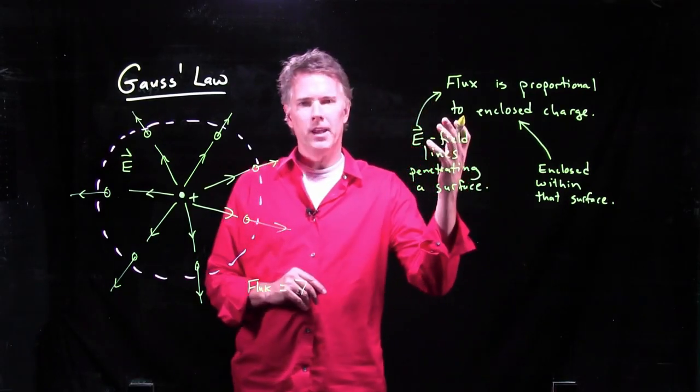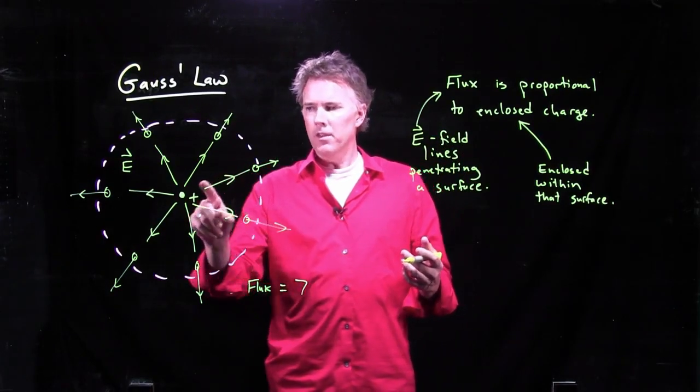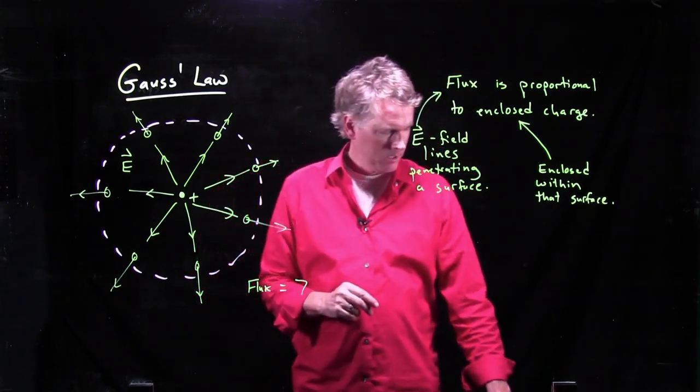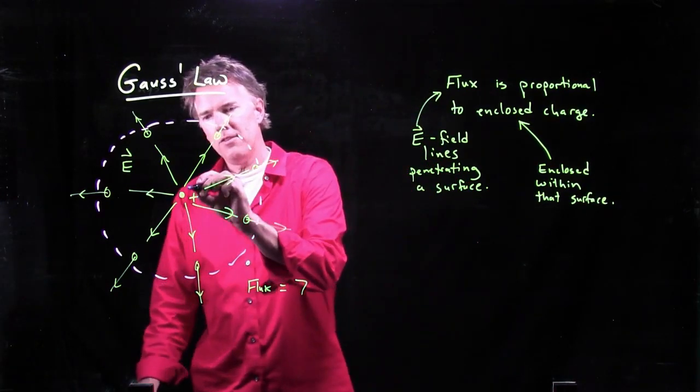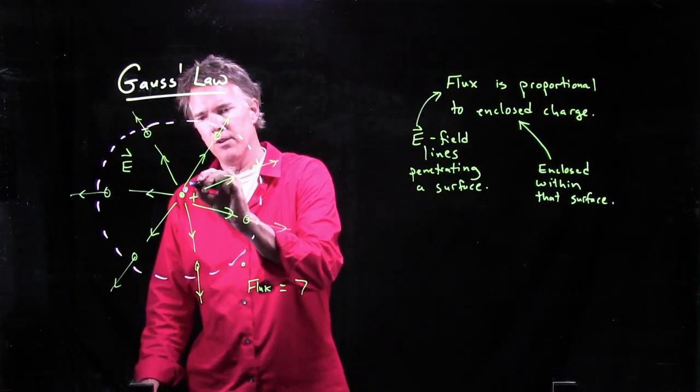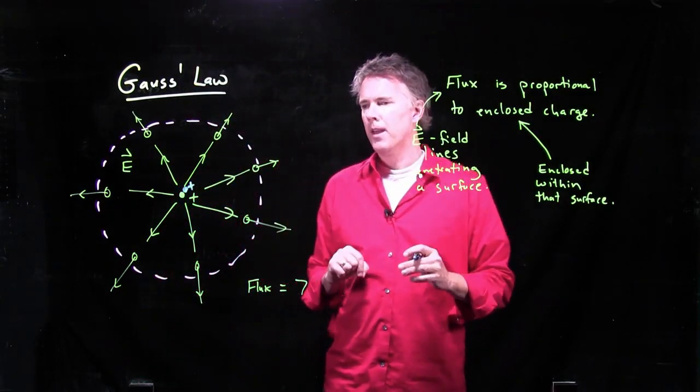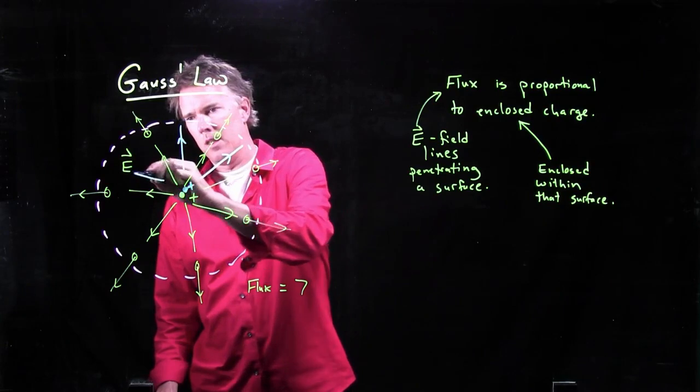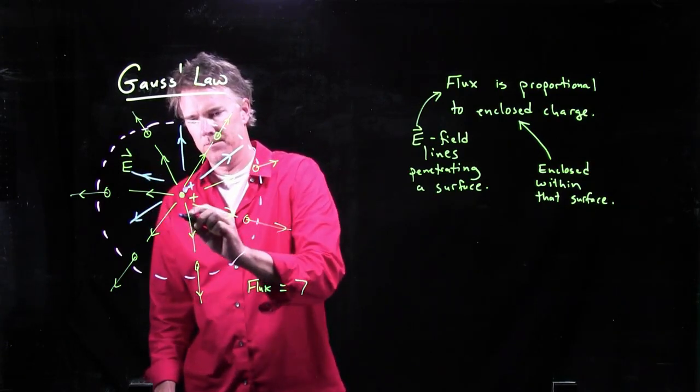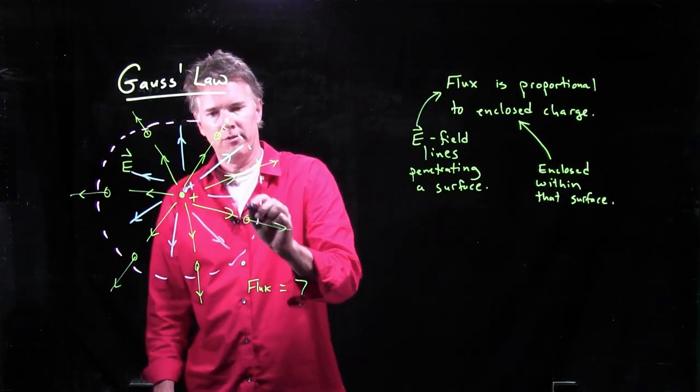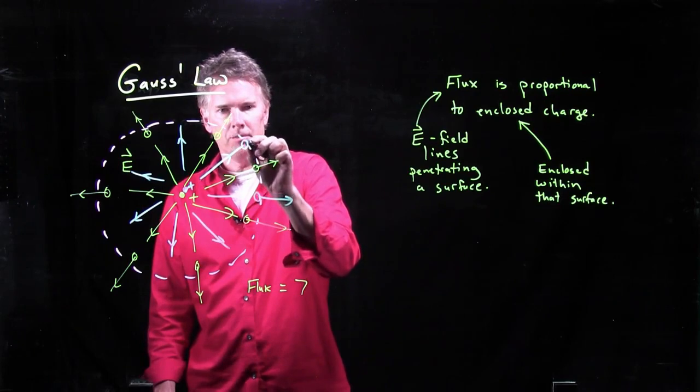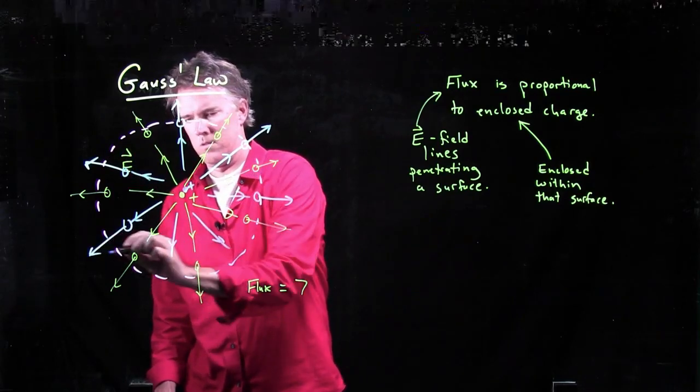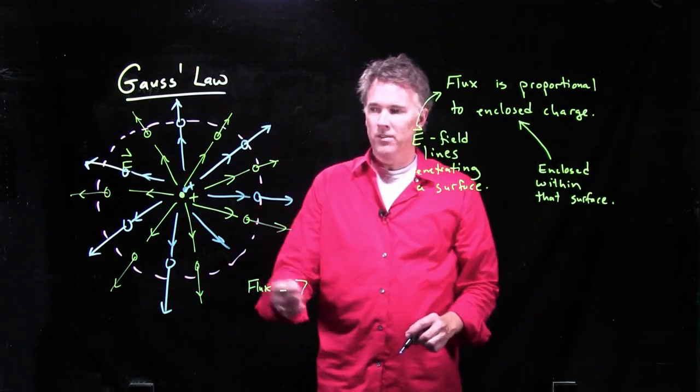In this case, we had a flux of 7. There are 7 lines of electric field coming out of our closed surface. But Gauss's law says that it's proportional to the enclosed charge. So in this case, we just had 1 charge in there. So if I add another charge in there, how does this work? Let's say I add another positive charge right in the center. They're supposed to be on top of each other. In that case, that will also make electric field lines that are pointing radially outward.